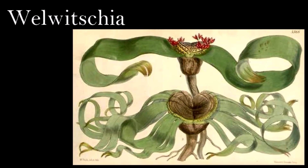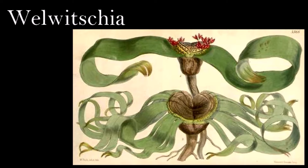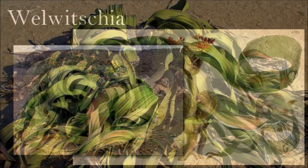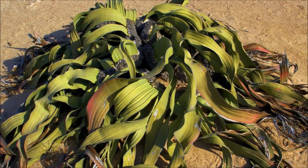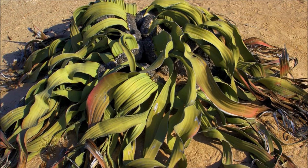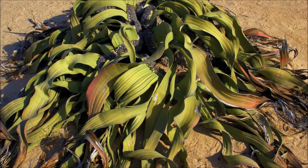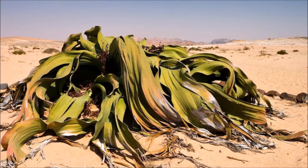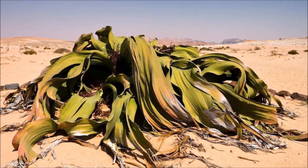Welwitschia mirabilis is a highly specialized gymnosperm that grows in the Namib Desert in southwest Africa. It has a very short stem tapering down into a long taproot, and two leaves that grow continually from their bases. Individual plants produce cones that have either pollen organs or ovules, and pollination is probably achieved through insects. Pollen similar to that from this genus and the related living Ephedra is known from the late Triassic onward. It is probable that Welwitschia and Ephedra diverged in the late Cretaceous, especially as both Welwitschia-like and Ephedra-like fossils are known from this time.